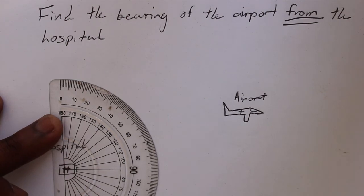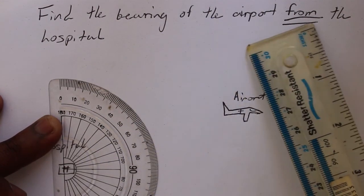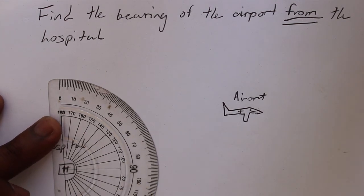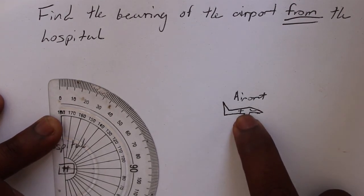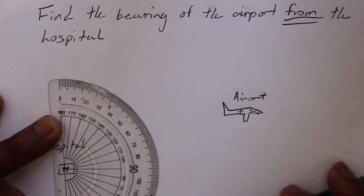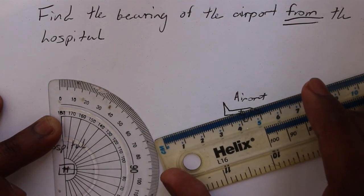Okay, so what we are going to do now, we are going to find the bearing of the airport from the hospital. So we are going to start by placing our protractor crosshairs in the middle of the hospital building, and we are trying to find that plus sign that is here at the airport. So what we are going to do then, we can take our ruler to give us a bit of assistance. We try to line it up as correctly as possible.